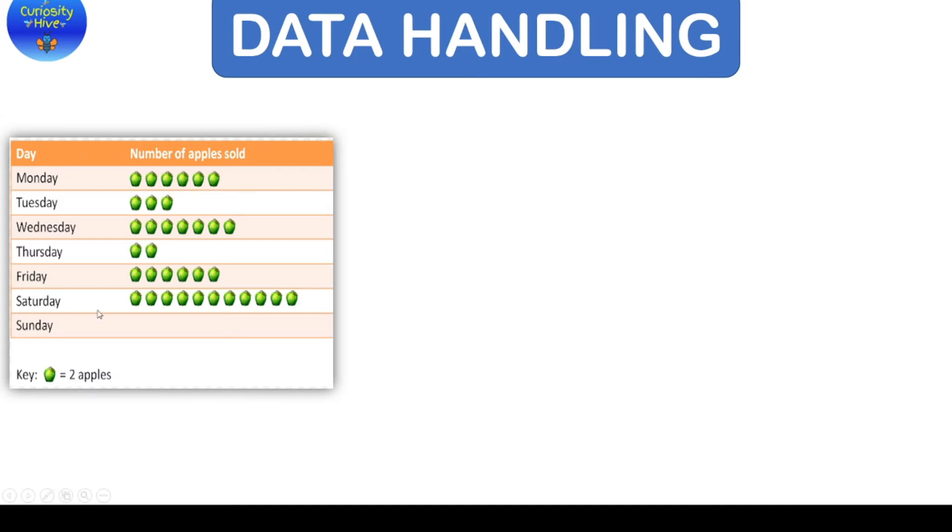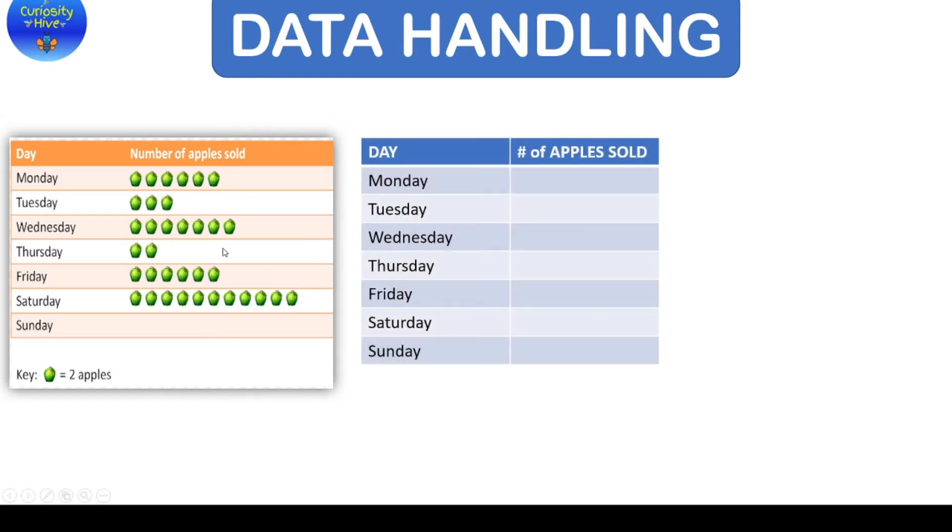So let's start with this tabular information in form of picture which is called a pictograph. Now this can be converted into a tabular form where I'll put the days alongside and for the number of apples sold, I should first plot the number of apples that are written here. So in Monday, there are 6 apples, Tuesday, there are 3, Wednesday, 7, Thursday, 2, Friday, 6 and Saturday has 11 apples. Now look at the key which is the most important thing that the image of the apple is actually equal to 2 apples. So to get the total number of count of the apples sold, we should multiply each of them with 2 and then we can get the actual number of apples sold.